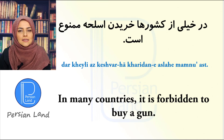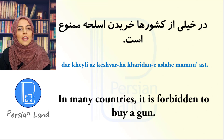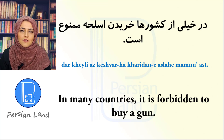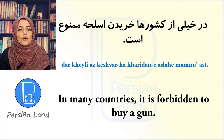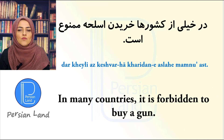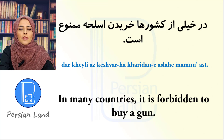در خیلی از کشورها خریدن اصلاح ممنوع است. خیلی از کشورها means 'in many countries' — we can also say توی خیلی از کشورا. خریدن اصلاح means 'to buy gone / razor'. اصلاح is 'gone'. ممنوع است means 'it is forbidden'.